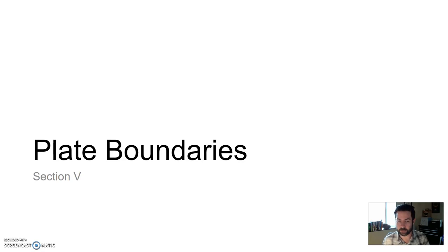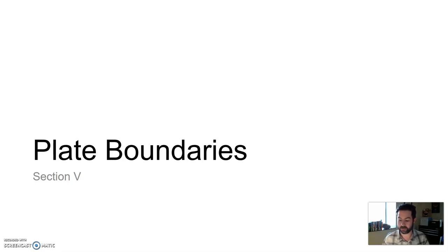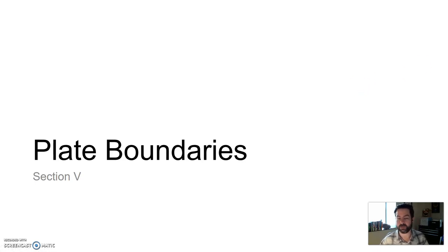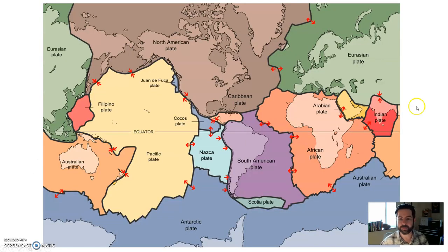Continental crust is typically on dry land, while oceanic crust is the crust typically underneath the oceans. From those combinations we get different geology based on the boundaries and the types of crust involved. So let's go through some of that.